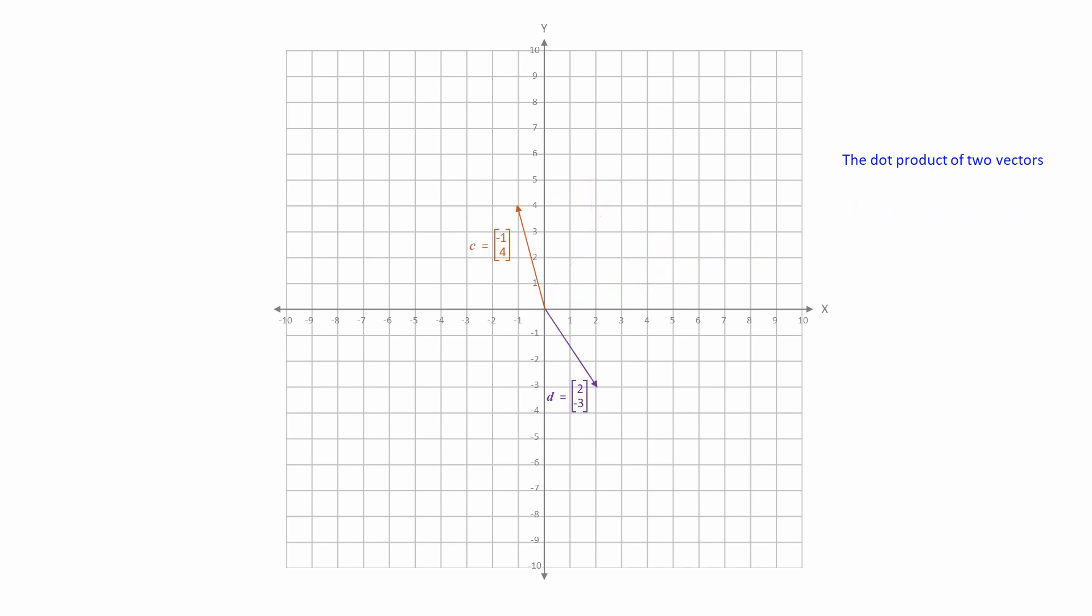Here's an example with some negative numbers. Applying the same method, the dot product this time is the scalar value minus 14. And here's another example, again in two dimensions. Notice that we generally write the multiplication symbol as a dot, which is why this is called the dot product.